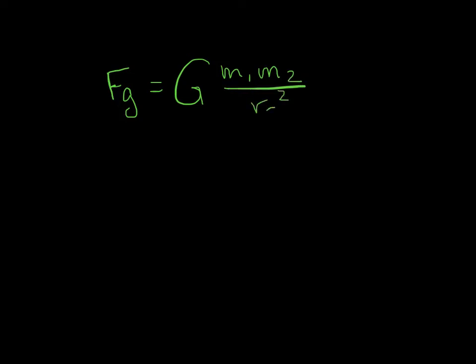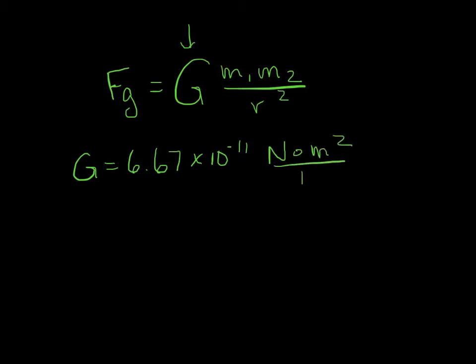What we're saying here is that there's some sort of gravitational constant — a proportionality constant. Big G's value is 6.67 times 10 to the minus 11, which is a pretty small number. Its units are Newtons times meters squared over kilograms squared.